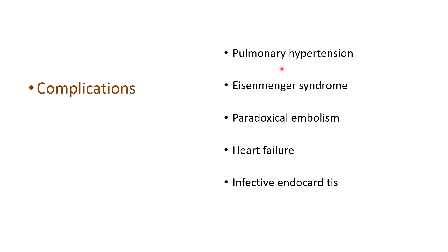Complications include pulmonary hypertension — lots of blood flowing through the pulmonary artery and veins causes them to become arterialized and narrow, leading to pulmonary hypertension. This increases right atrial pressure and causes reversal of shunt — Eisenmenger syndrome. Paradoxical embolism: although blood normally flows left to right so the risk of embolism is less, sometimes due to changes in pressure between the atria, embolism can occur and instead of going to the lung, it goes to the CNS or other parts of the body.